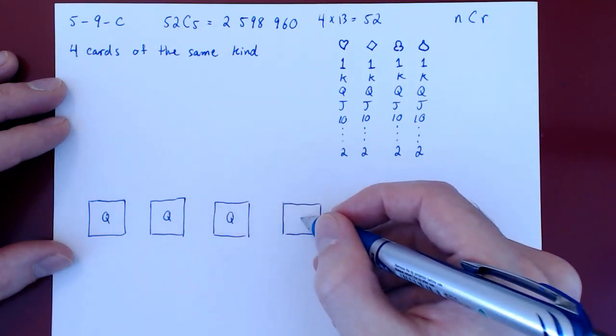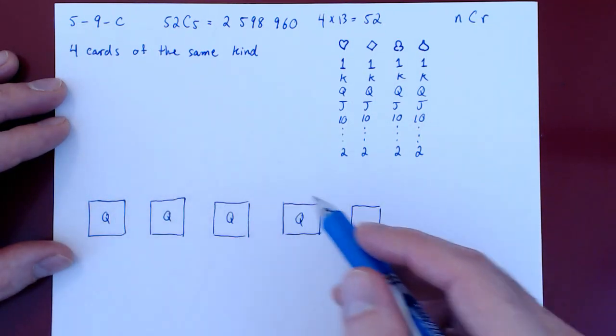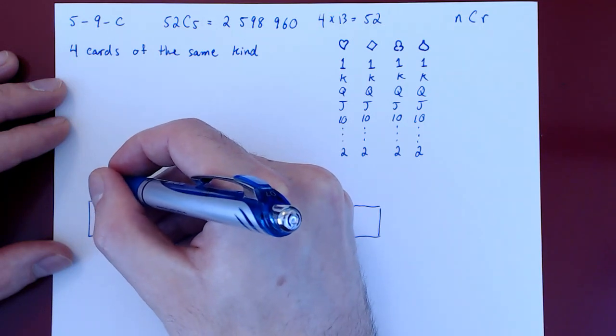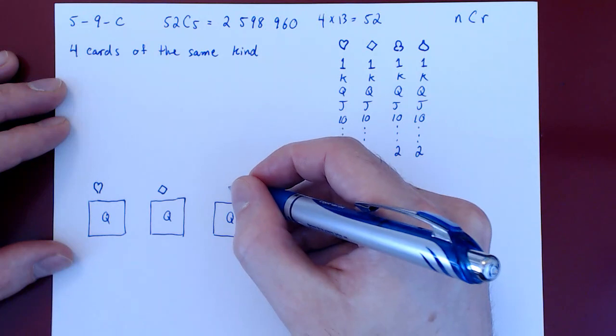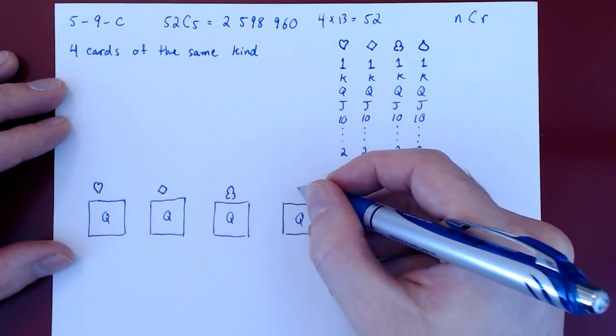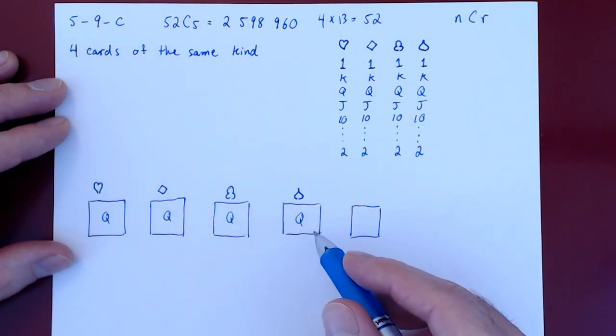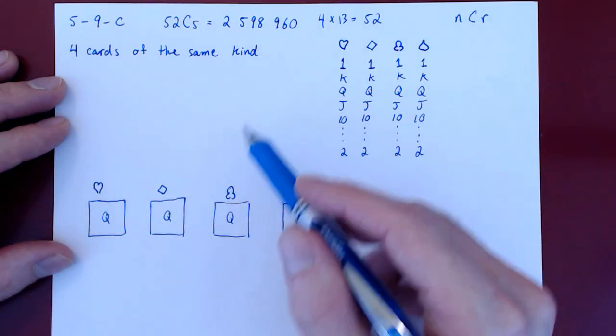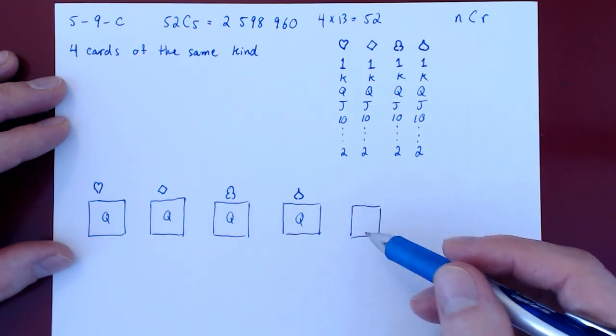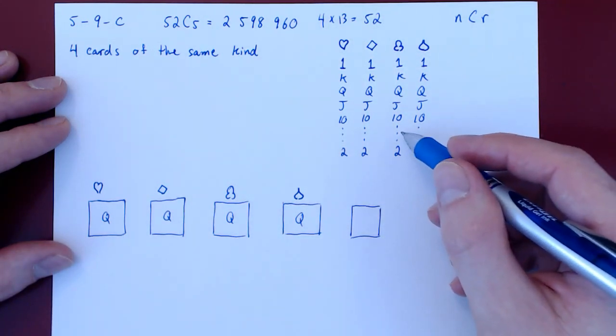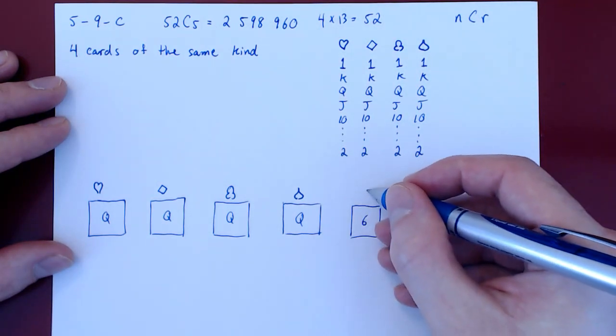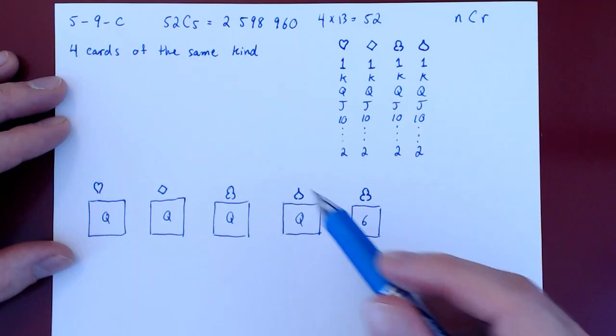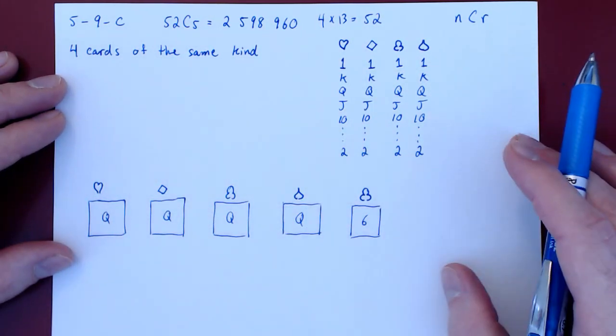We know we have 4 cards of the same kind. Well, we have a quadruple of what? Is it a quadruple of 2s, 3s, up to aces? Say here we have a quadruple of queens. So we have 4 queens. What are their suits? Well, we take all of the 4 queens, so all the suits are represented. As we've said, the order does not matter. So let's say it's the queen of hearts, then diamonds, clubs, and spades. Now we have our quadruple. We're missing the 5th card. Well, as we care about 4 cards of the same kind, we already have our quadruple. The 5th card can be any other card. Say we have a 6 of clubs.